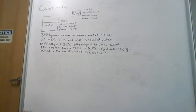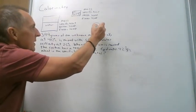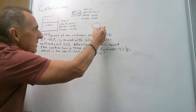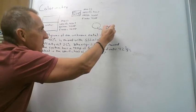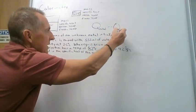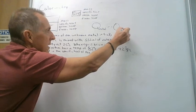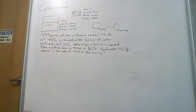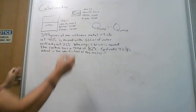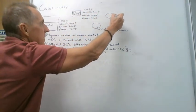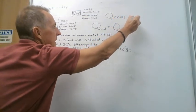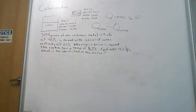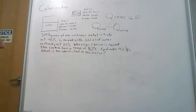What we're saying is that the Q, or the heat lost by the metal, is equal but opposite in sign to the Q that is gained by the water. Remember, Q equals mass times specific heat times the change in temperature. So if we don't know one of those pieces of the puzzle, we can figure out the missing piece based on the fact that all the energy lost by the hot metal is gained by the cooler water.